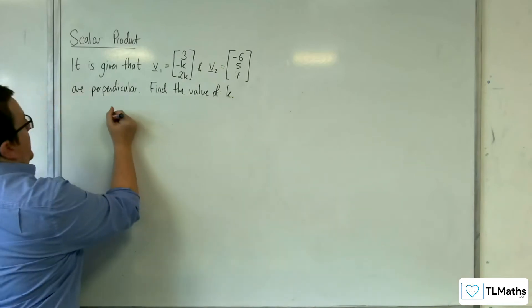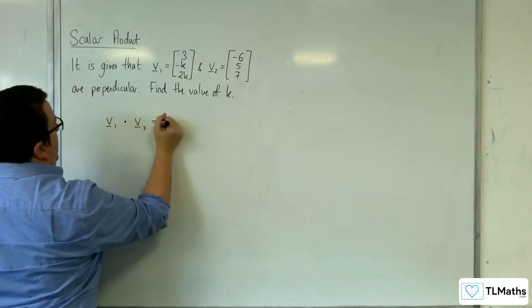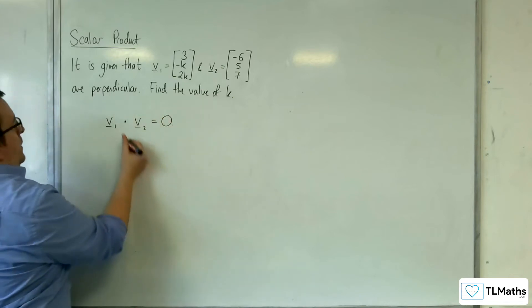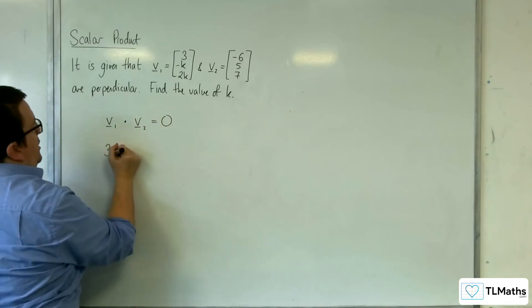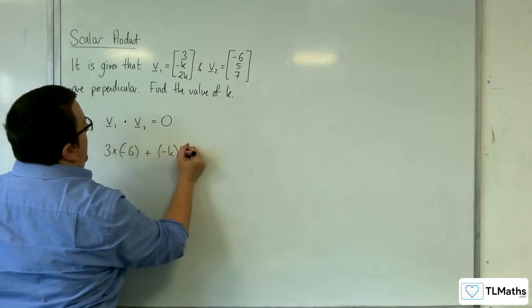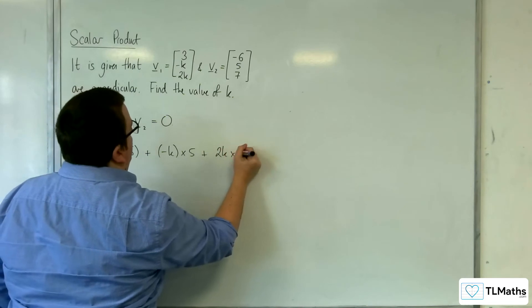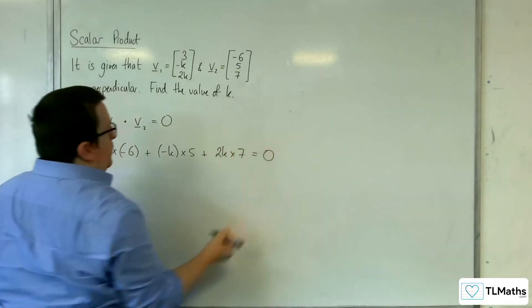If they are perpendicular, then v1 dotted with v2 must equal 0. So that means 3 times minus 6 plus minus k times 5 plus 2k times 7 must equal 0.